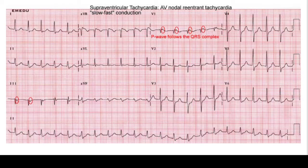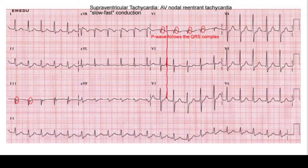Here's an example. Looking at V1, we have some retrograde p-waves nicely circled. You see the QRS complex, and then a little bump right after it — that's the p-wave, not the t-wave. If you look at the rhythm strips below in V2 and V3, you can see the t-waves there. Lining them up, the negative deflection in V1 is probably the t-wave, and this positive deflection is the p-wave — a retrograde p-wave. This patient's heart is going at about 150 beats per minute. It's regular, narrow, so it's a regular narrow complex tachycardia, and because it has retrograde p-waves, you know this is an SVT.